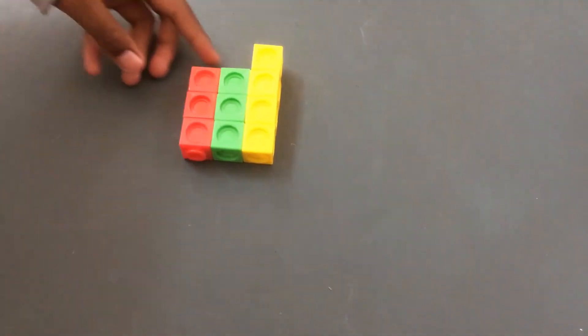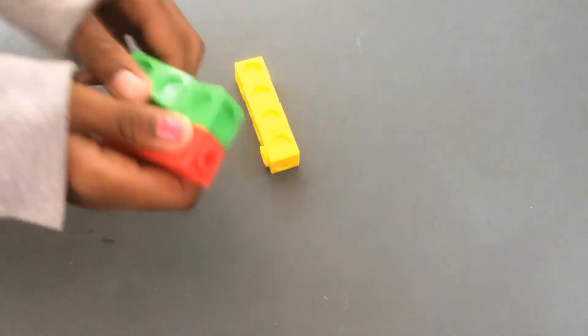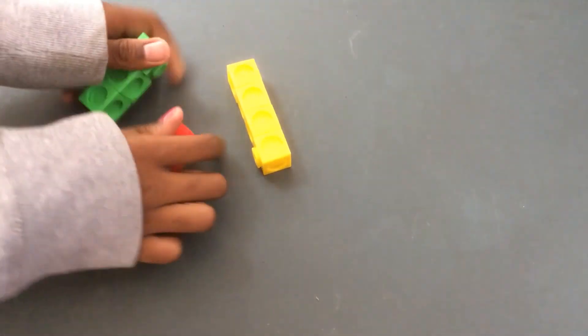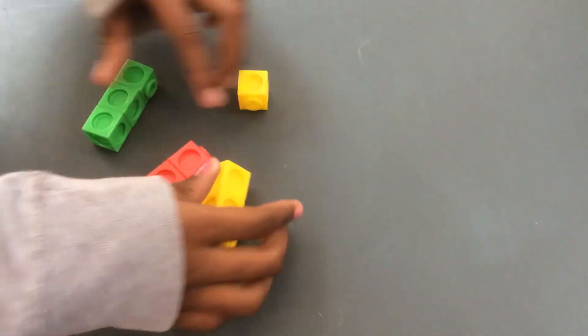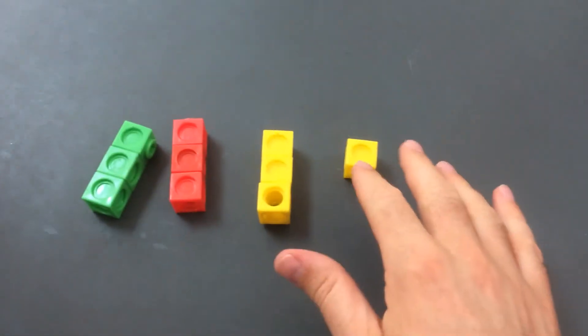So here we have got ten-thirds, and as we split it into an improper fraction, we've got three full numbers and one-third. So each of these blocks represents a third, so you had ten-thirds.